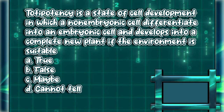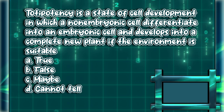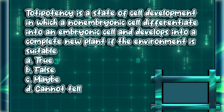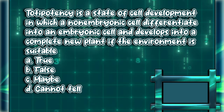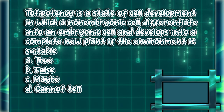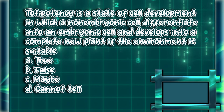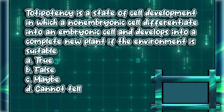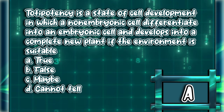Totipotency is a state of cell development in which a nonembryonic cell differentiates into an embryonic cell, and develops into a complete new plant if the environment is suitable. A. True. B. False. C. Maybe. D. Cannot tell. The answer is letter A.